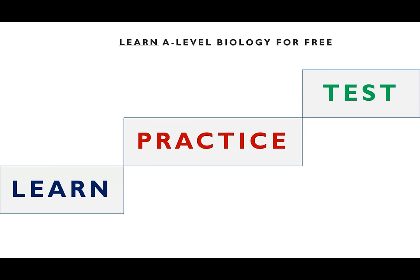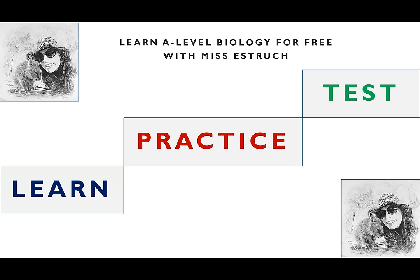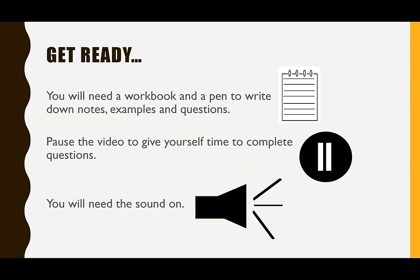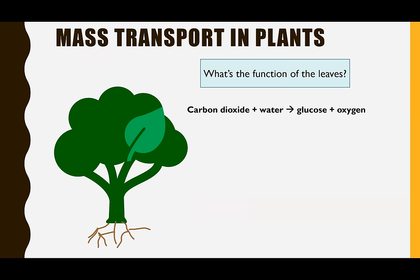Hello and welcome to Learn A Level Biology for free with Ms Estrich. Today we're going to be going through translocation, looking at how organic substances such as sugars are moved en mass around plants. This is quite a challenging topic for students, so you might want to have some paper and pen at the ready to note down any key points as we go through.